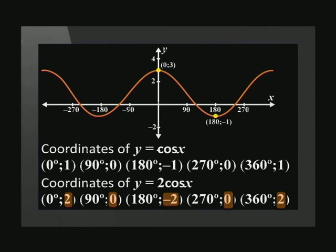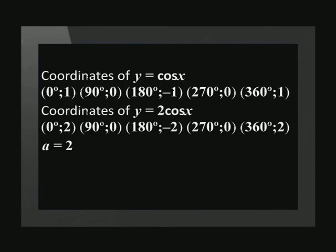Now that we have these coordinates, we see that the graph has shifted 1 unit up in order to get the coordinates that were originally given. We can say that a is equal to 2 and q is equal to 1. So the equation is y equals 2 cos x plus 1.